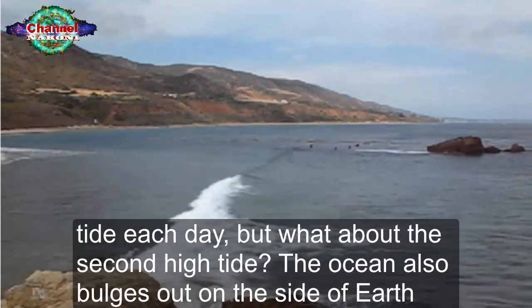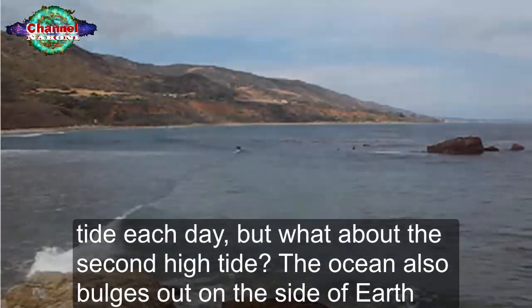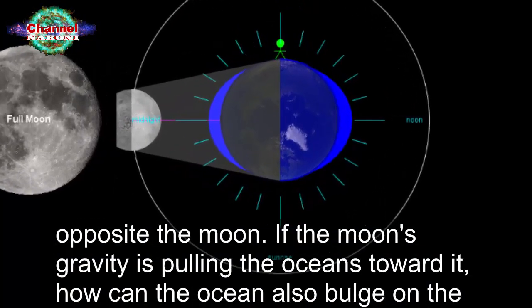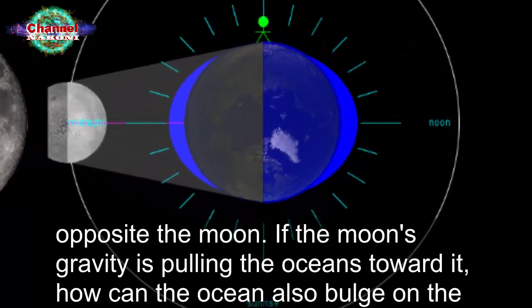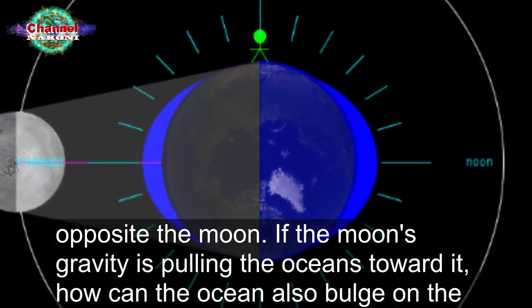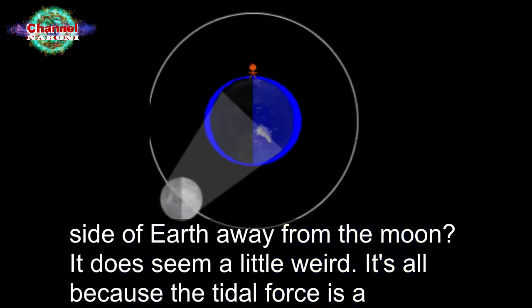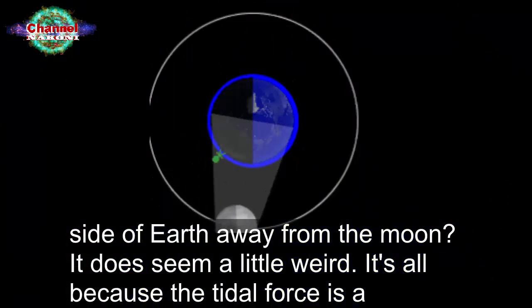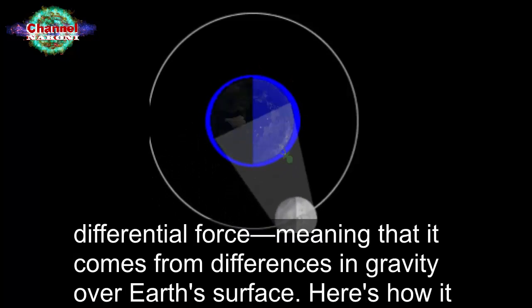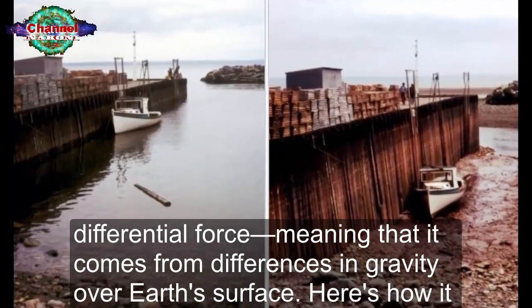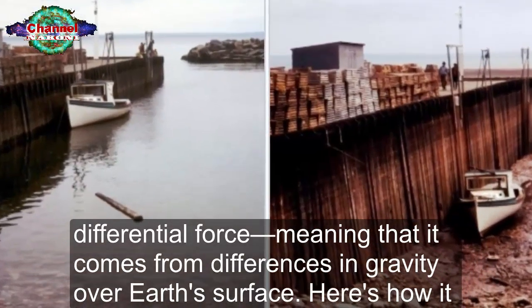That explains the first high tide each day, but what about the second high tide? The ocean also bulges out on the side of earth opposite the moon. If the moon's gravity is pulling the oceans toward it, how can the ocean also bulge on the side of earth away from the moon? It does seem a little weird. It's all because the tidal force is a differential force, meaning that it comes from differences in gravity over earth's surface.